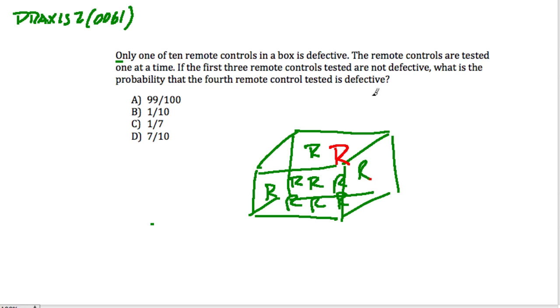The remote controls are tested one at a time. So we're going to randomly grab remote controls and pull them out and test it. If the first three remote controls are tested, so we're going to pull three of them out, and they're not defective. So we're pulling three of the non-defective ones out. What is the probability that the fourth remote control tested is defective?